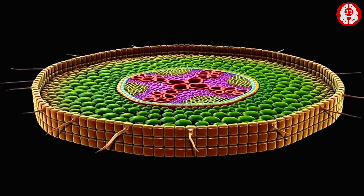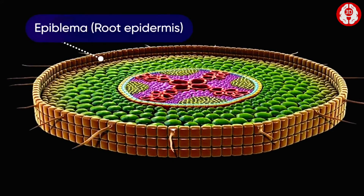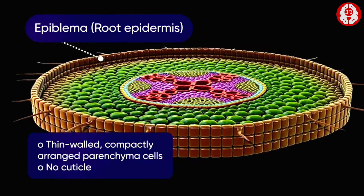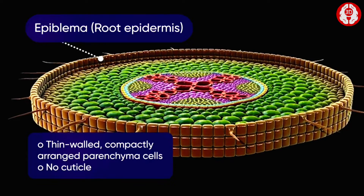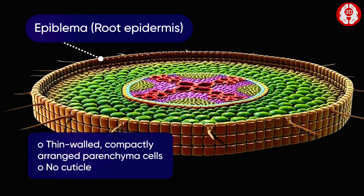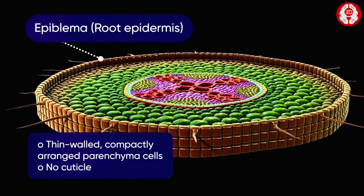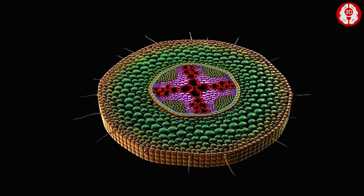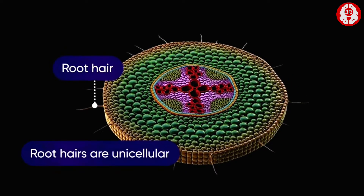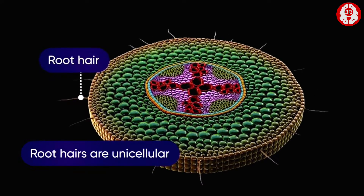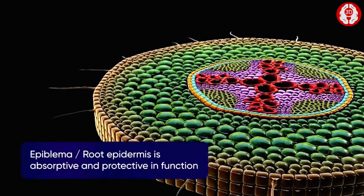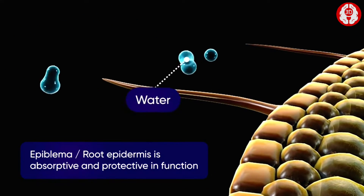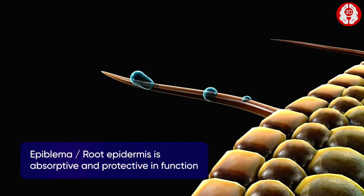The outermost layer is the epiblemma, which consists of thin-walled, compactly arranged cells. There is no cuticle on the epiblemma. A few cells of this layer protrude as an outgrowth called the root hair. Epiblemma is thus absorptive and protective in function.